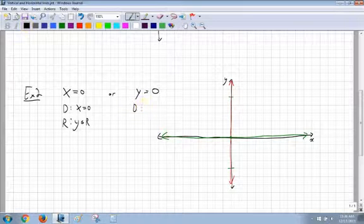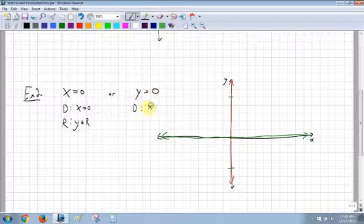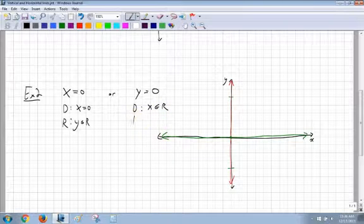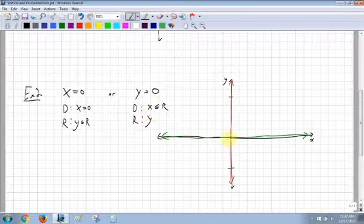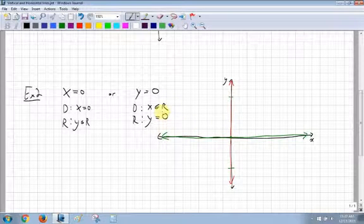So for my domain, it covers all the x values. So it's going to be x is an element of all real numbers. For my range, all my y values, there's only one included. It never goes up, it never goes down. So it's just y is equal to 0, and that's it.